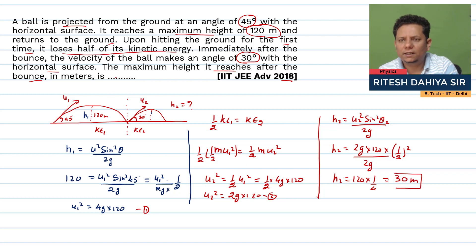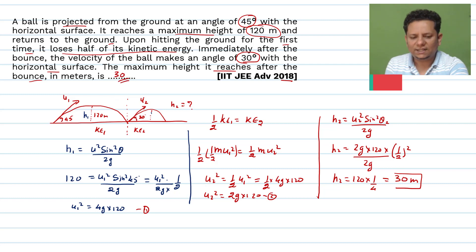Second bounce maximum height attained will be equal to 30 meters. And that will be our final answer. Here we go.